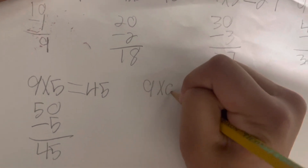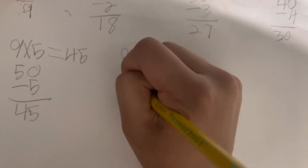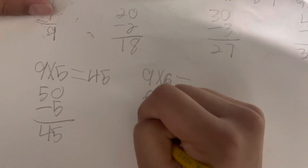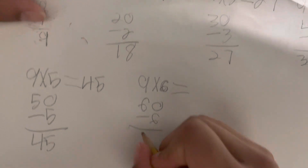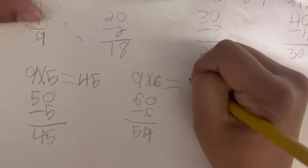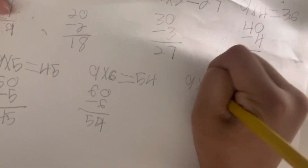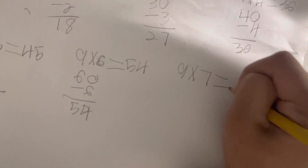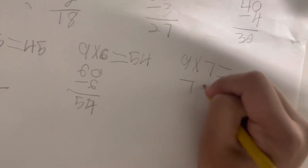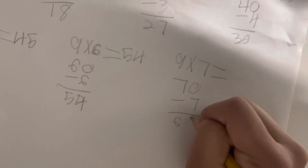9 times 6 equals. You copy the same number and add a 0 at the end, then minus 6. Then minus the same number. It equals 54.